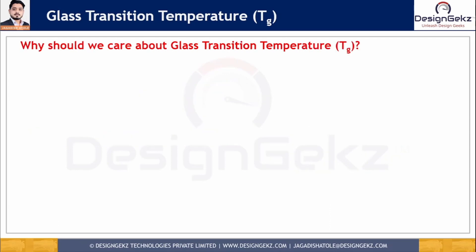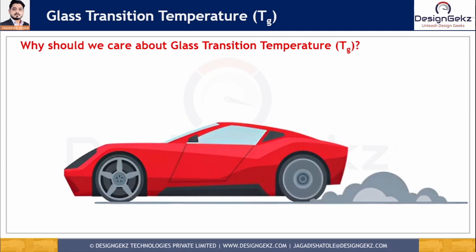Why should we care about the glass transition temperature? Identifying Tg is often used for quality control and research and development. The Tg of different polymers makes a polymer better suited for some applications than others. For instance, a rubber tire is soft and ductile because at normal operating temperature it is well above its glass transition temperature. If its Tg were greater than its operating temperature, it would not have the flexibility required to grip the pavement. Tg is helpful for selecting plastics according to function and application requirements, including working temperature range.